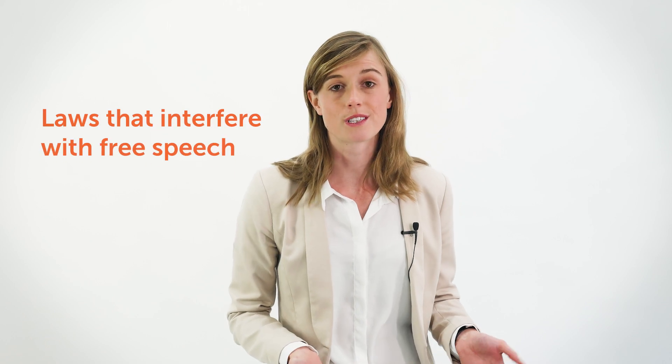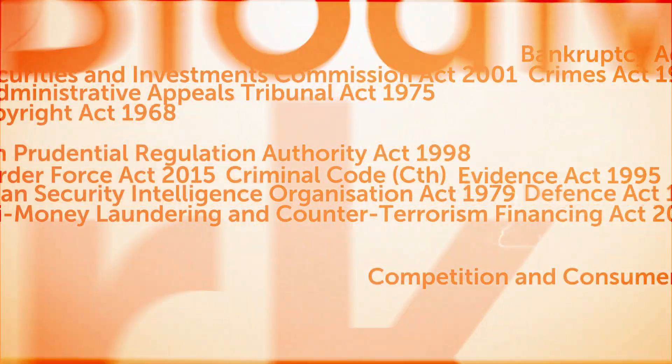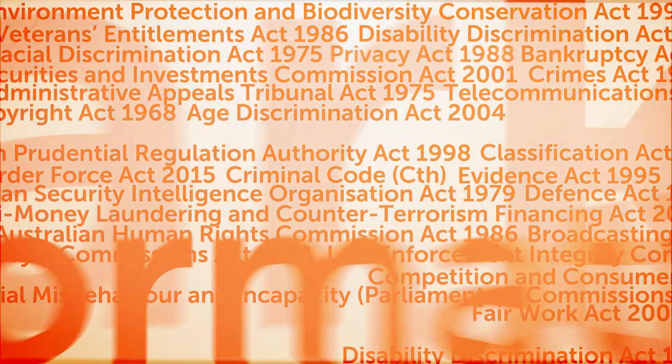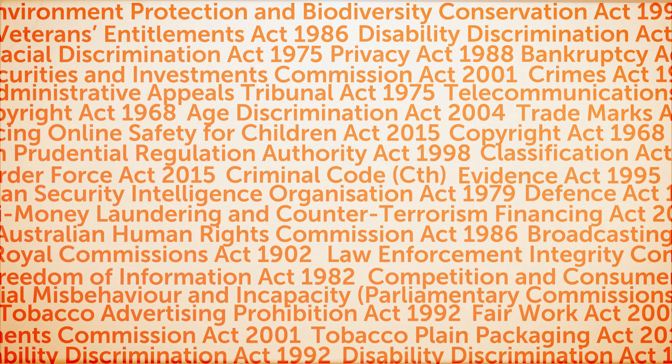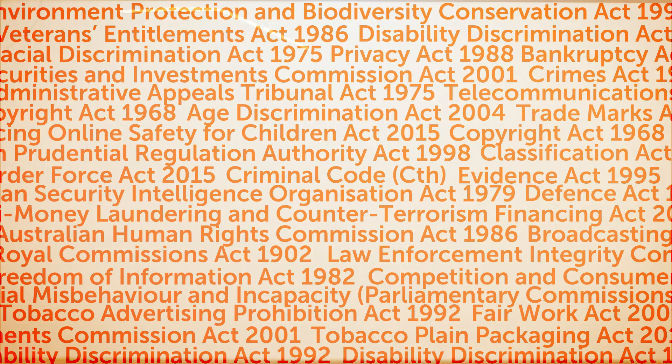There are also a number of laws that prohibit some types of speech and could be seen as interfering with free speech. These include criminal laws, secrecy laws, contempt laws, anti-discrimination laws, media and telecommunication laws, information laws, and intellectual property laws. Anti-discrimination laws do protect people from discrimination, but they also restrict free speech by making it unlawful to say things that could offend, intimidate or harass people based on things like race, age, gender or disability. In other words, we have a freedom of expression, but not a freedom to offend.